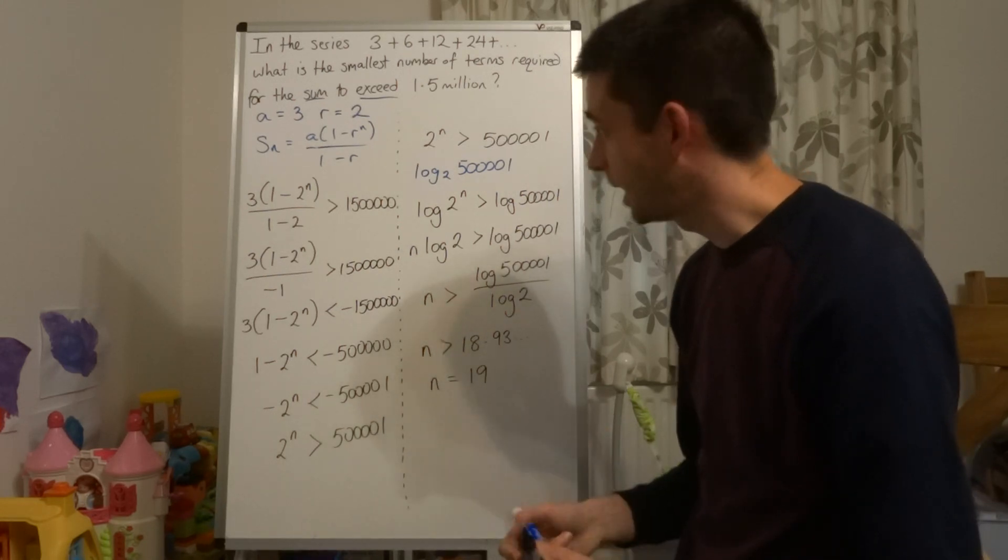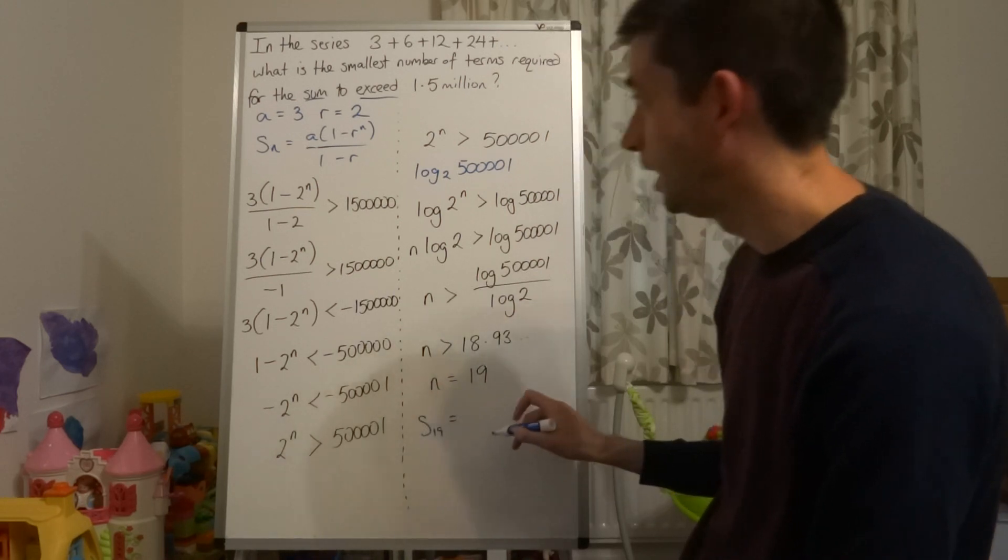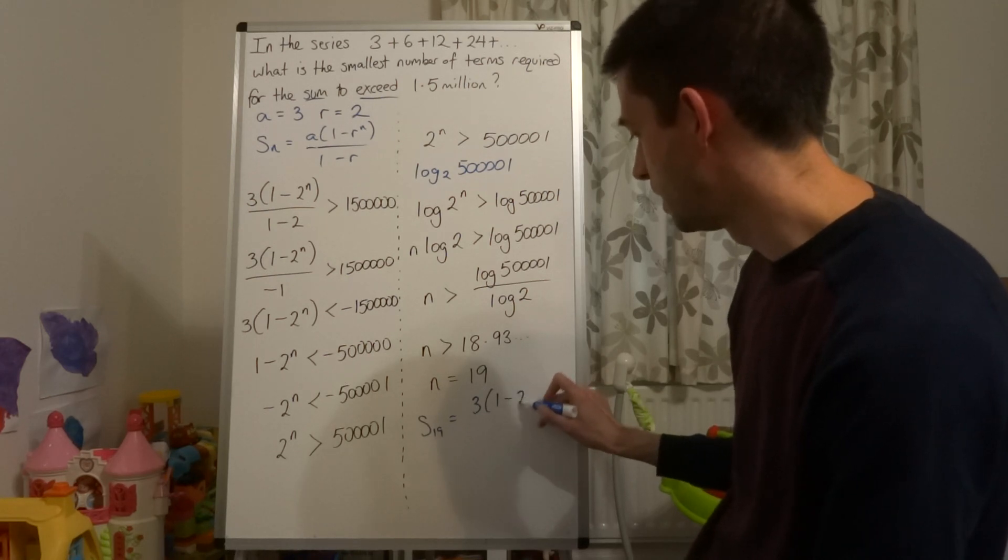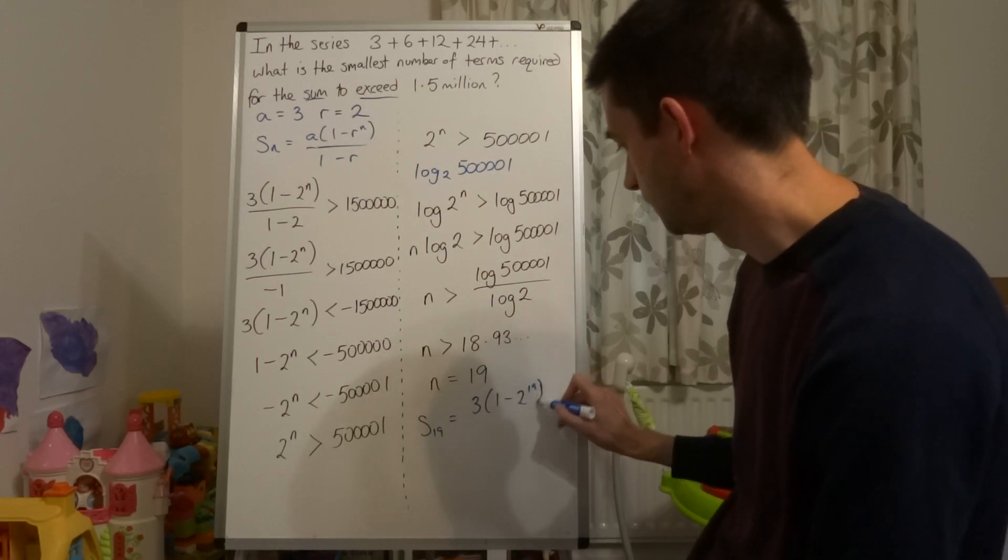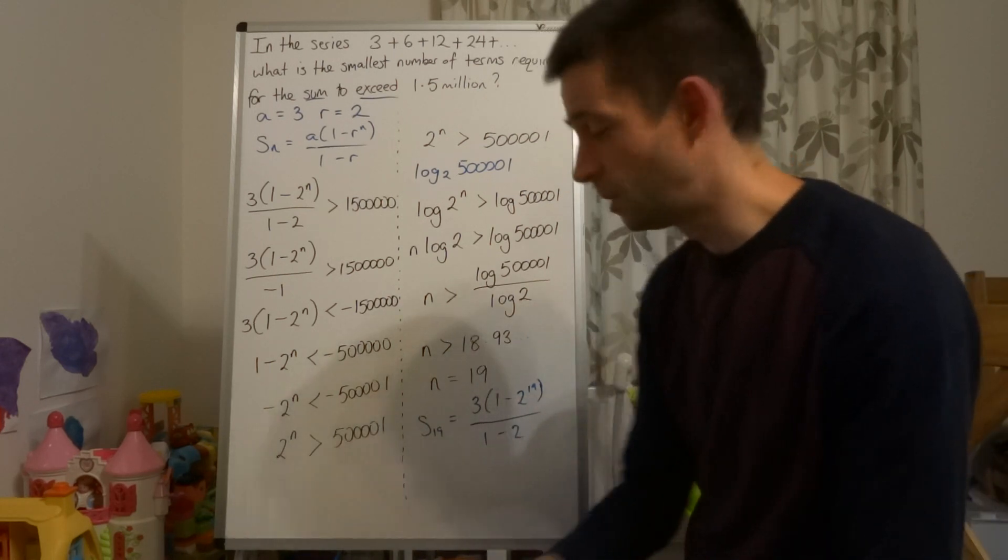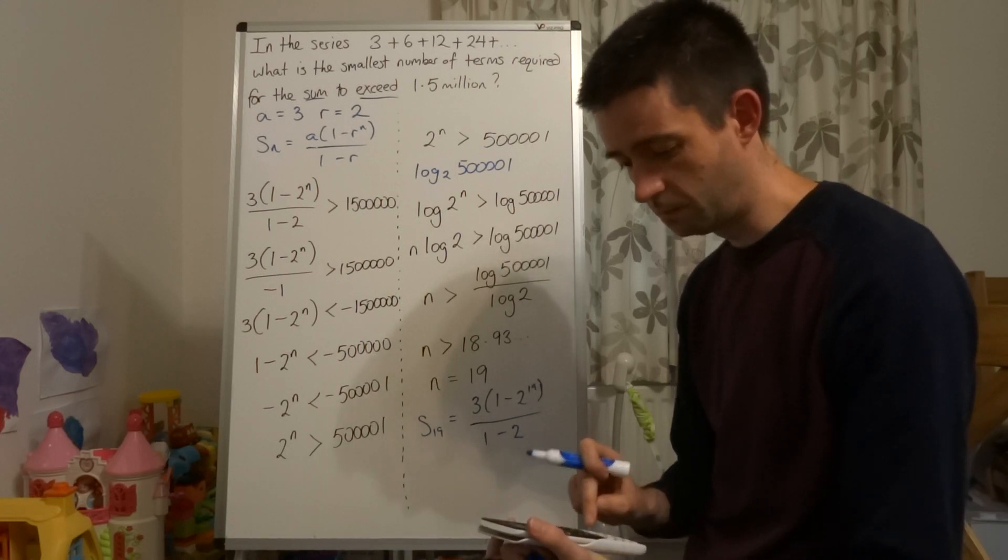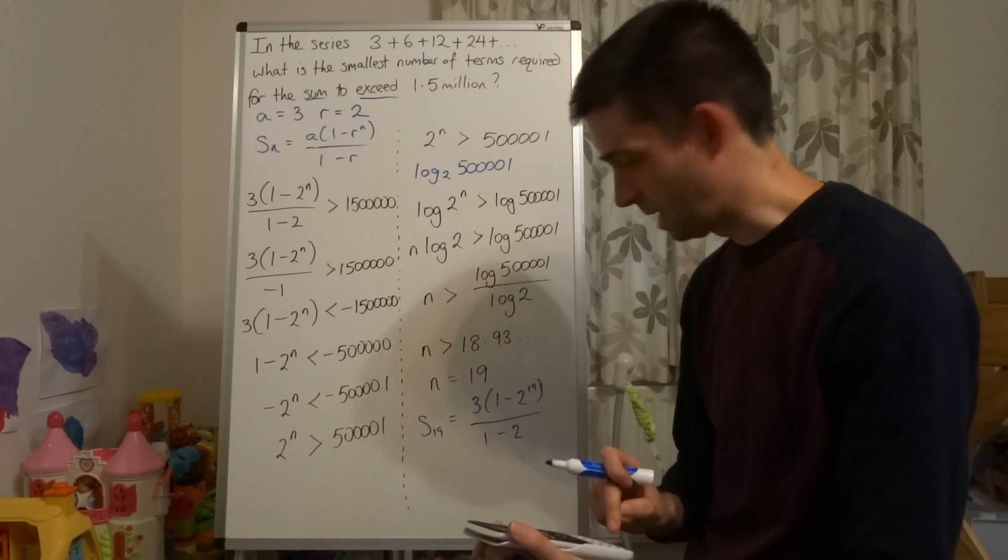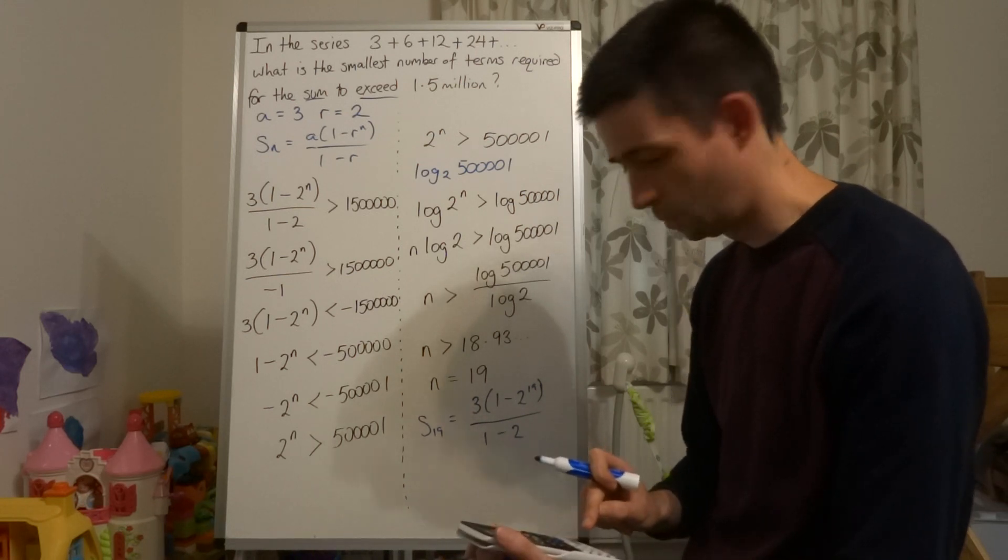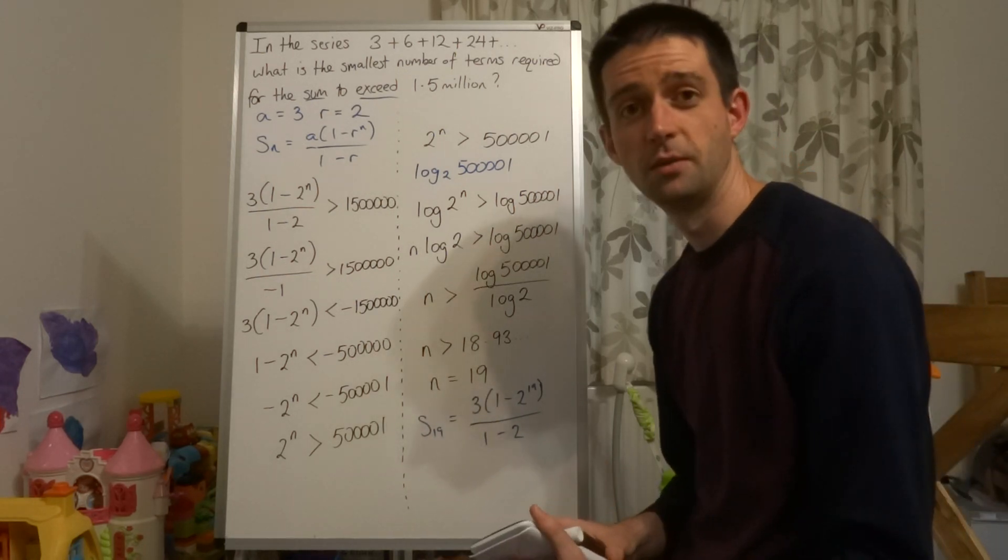And if you just wanted to check, it's worth doing. You could say sum to 19 is a, which is 3, multiplied by 1 minus 2 to the power of 19, all over 1 minus 2. So just check, that's greater than 1.5 million. I'm just going to do it now. So 3 multiplied by 1 minus 2 to the power of 19, all over negative 1, comes out as just over 1.5 million.